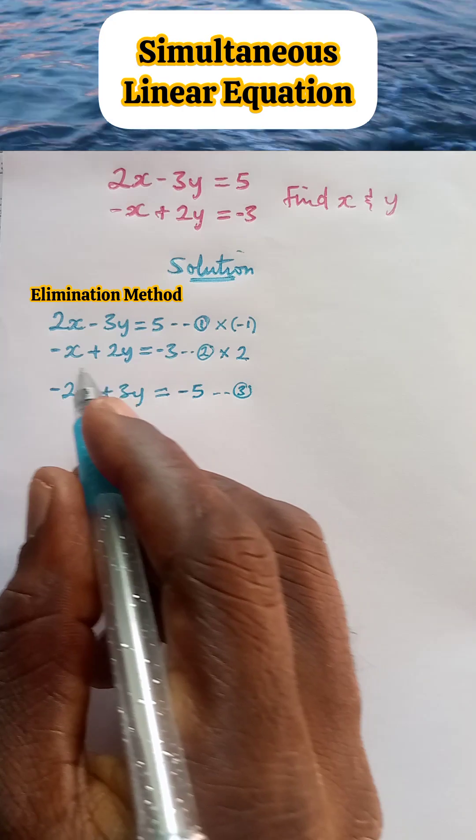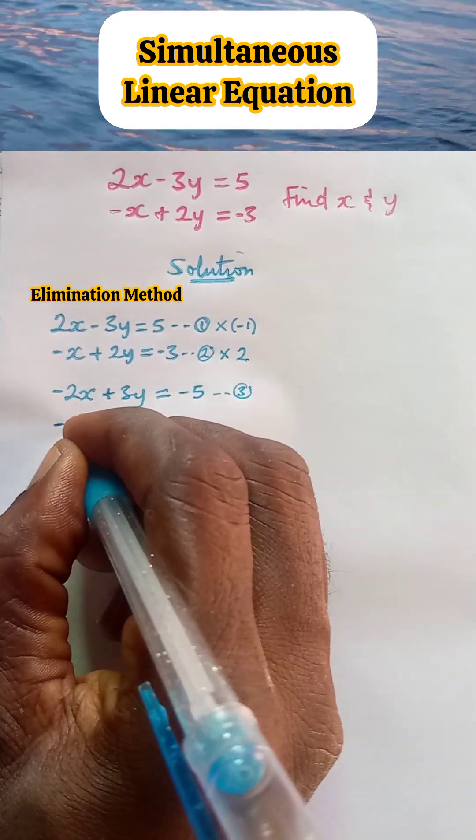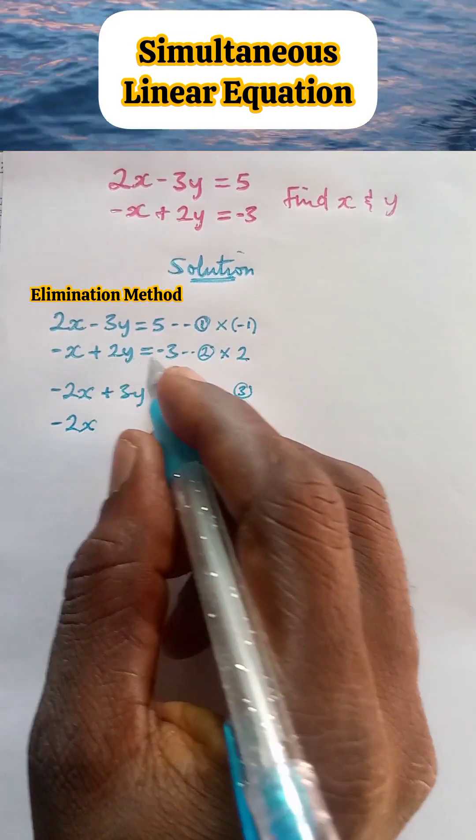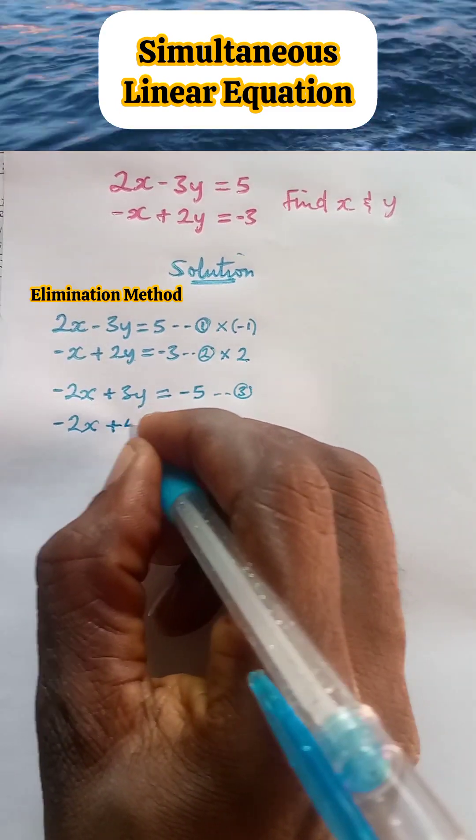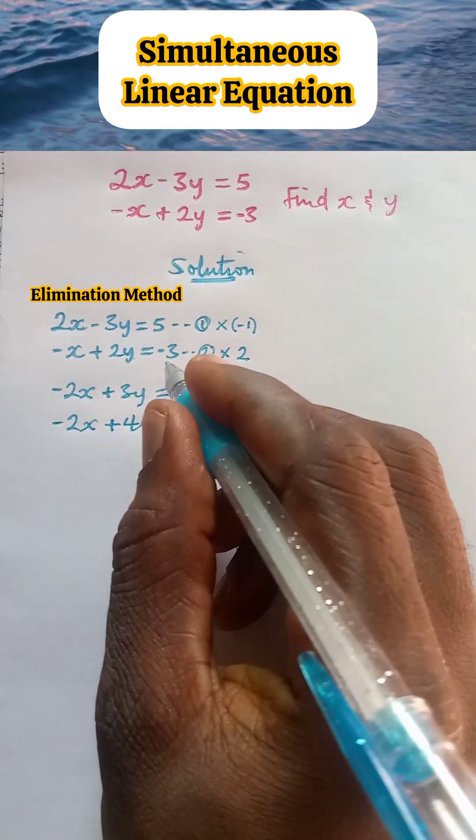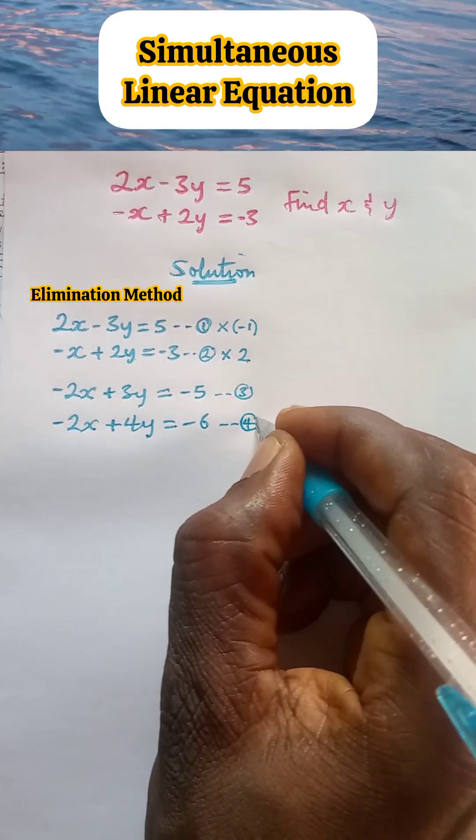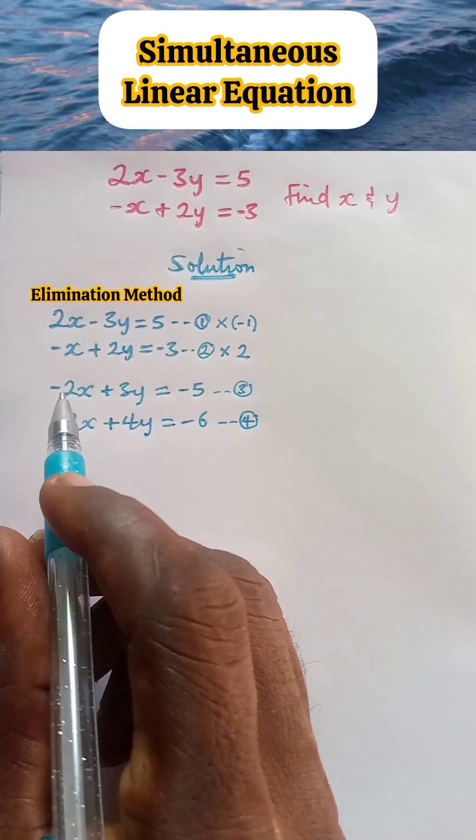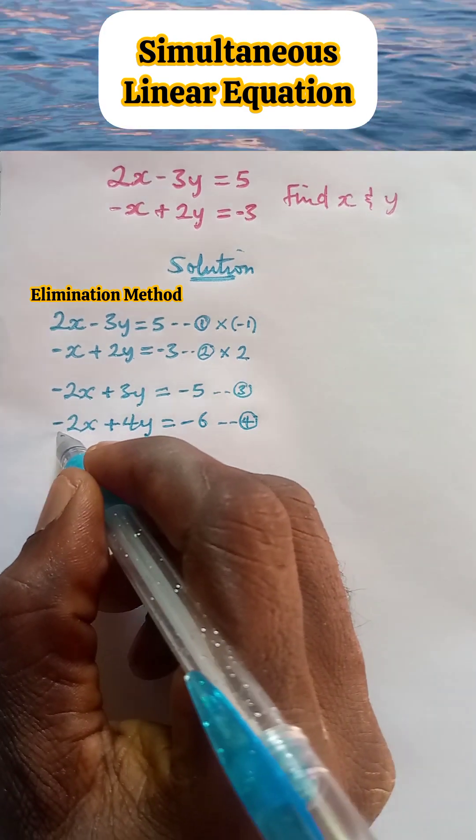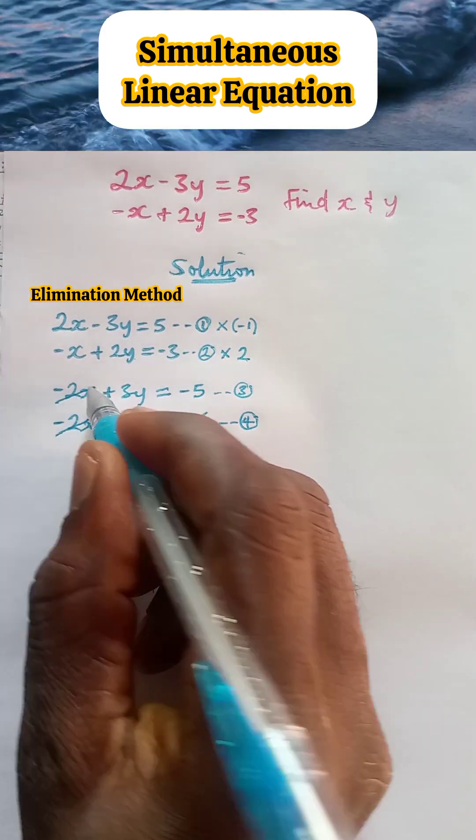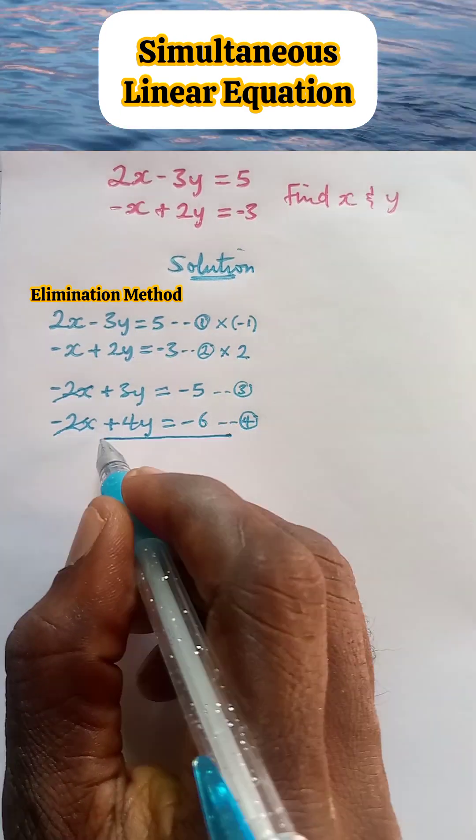Next, 2 multiplied by minus x is minus 2x. 2y multiplied by 2 gives us plus 4y equal to minus 3 multiplied by 2 is negative 6. Let's call this equation 4. Now that the coefficients of the 2x are the same, they will both eliminate each other. And we are left with this.